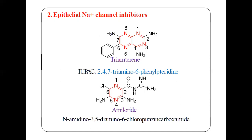Triamterene has a pteridine ring system. When numbered, the ring goes 1 through 8. Positions 2, 4, and 7 all have amino groups, and position 6 has a phenyl group. So triamterene is named: 2,4,7-triamino-6-phenylpteridine.